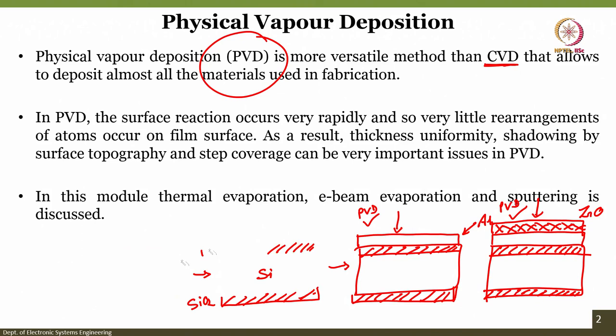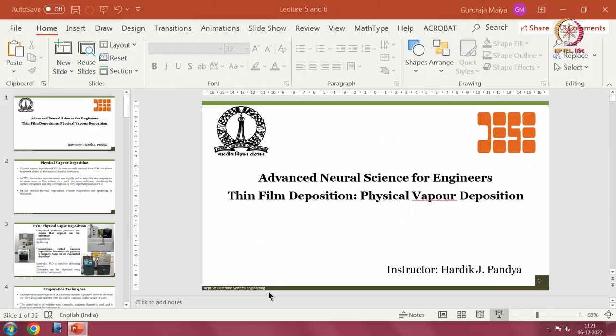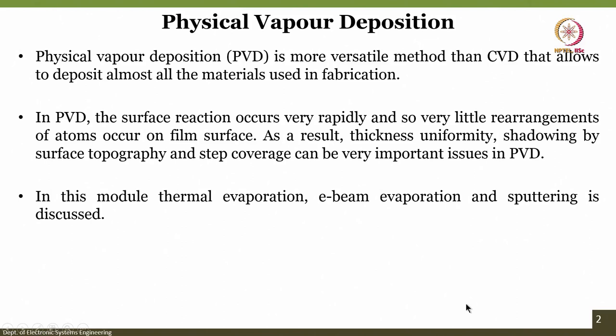In PVD the surface reaction occurs very rapidly, so very little rearrangement of atoms occurs on the film surface. We need to first understand how this works — what is surface reaction, what does rapidly mean, and what is meant by very little rearrangement of atoms.